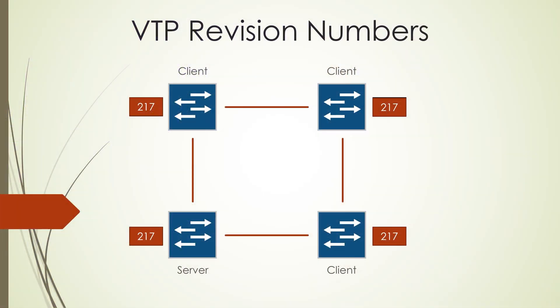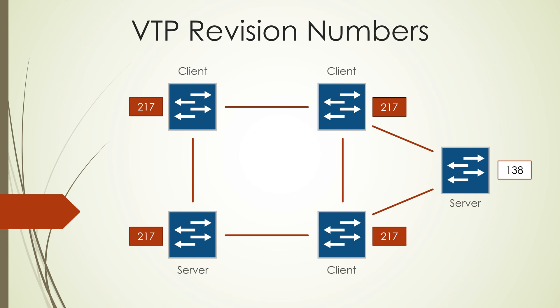Let's imagine that a server is offline for a while because it was faulty and being repaired. It's then introduced back into the network with a VTP revision number of 138 — lower than the client numbers it's connected to. A client then passes a VTP message with a newer configuration revision number, and the server will respect this as valid information and apply the config to match. So in this sense, yes, a client switch can actually configure a server switch.